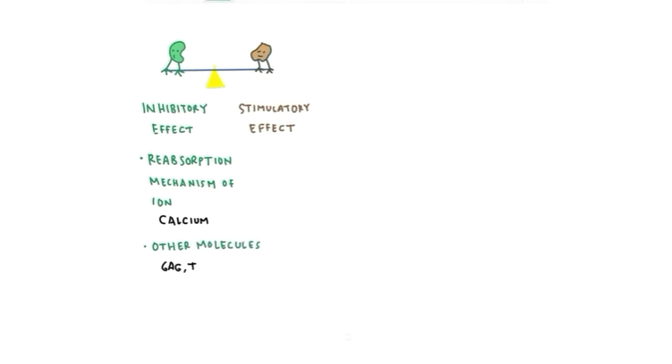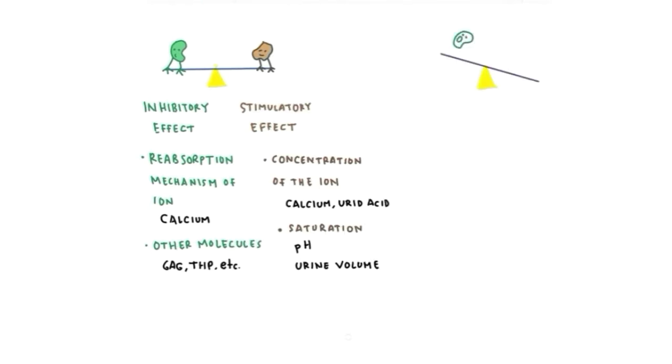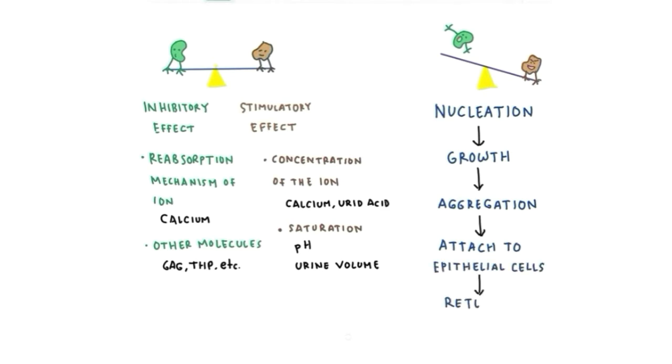How exactly people can have nephrolithiasis in their body? It's controlled by two things: things that have inhibitory effect and things that have stimulatory effect. Inhibitory effects include reabsorption of the ion like calcium and other molecules that can inhibit stone formation like glycosaminoglycan, Tamm-Horsfall protein, etc. On the other hand, stimulatory effect includes the concentration of the ion like calcium, uric acid, and the saturation that can be affected by pH and urine volume. When these two things are unbalanced, nucleation of stone constituent crystals can happen. They can grow and aggregate to a size that can interact and attach to epithelial cells in the kidneys or renal collecting system, leading to retention and stone formation.